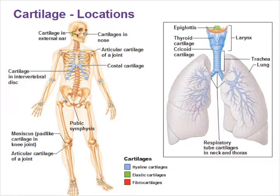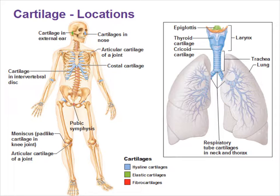Take-home messages: you need to know the three types of cartilage, their functions, and what distinguishes them. Know the properties all cartilage shares, and the arrangement of cartilage and perichondrium — where chondroblasts and chondrocytes are found. You need to be able to recognize the three types of cartilage from a picture and know where each is found in the body.